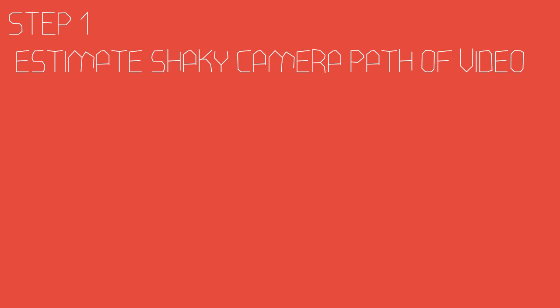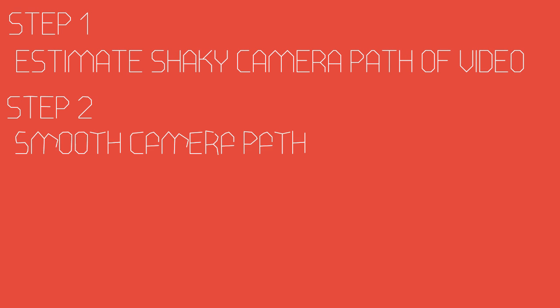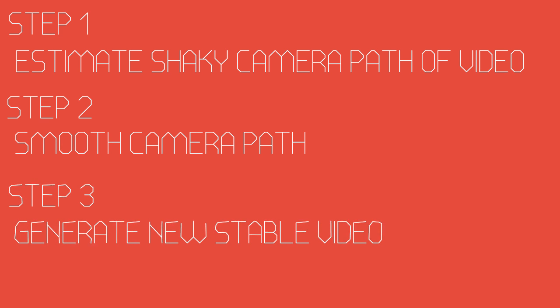Our video stabilization algorithm consists of three main steps. First, we have to compute the original camera path. Second, we want to smooth this camera path. And third, we need to generate a new stable video.